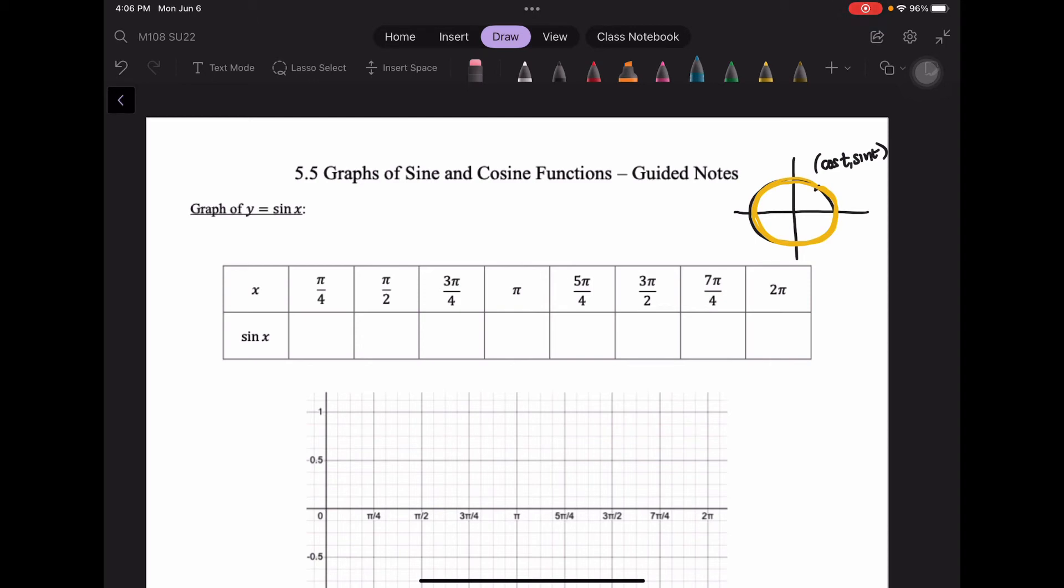The y value that corresponds to pi over 4 is square root of 2 over 2 in the first quadrant. At pi over 2, which is on the y-axis at the top, that has a value of 1. 3 pi over 4 is also root 2 over 2, and y is positive in the second quadrant, so that's still positive.